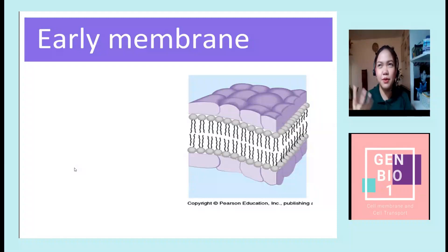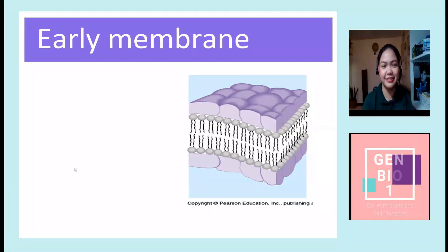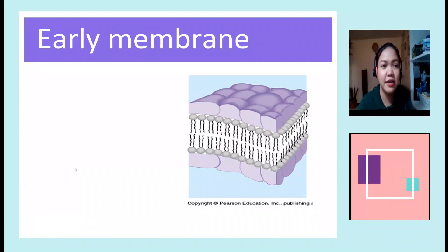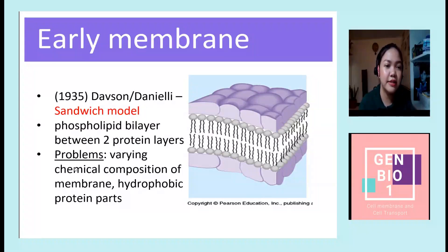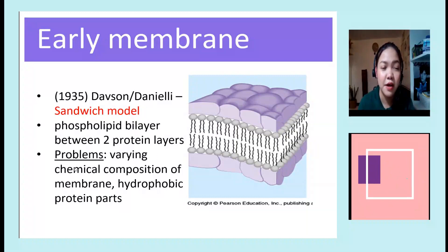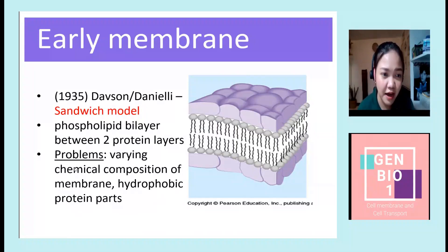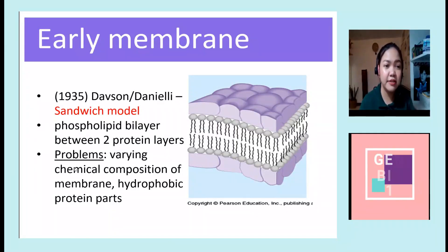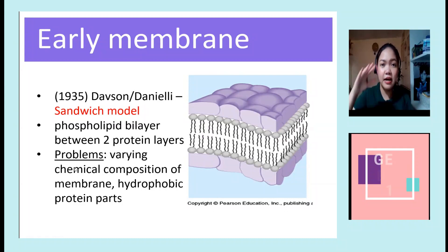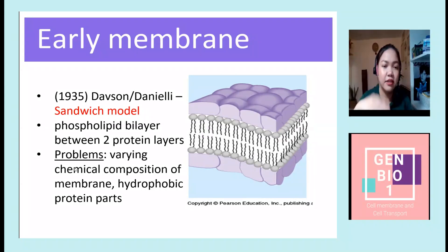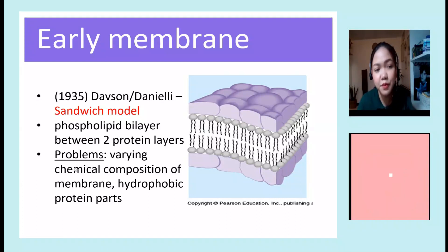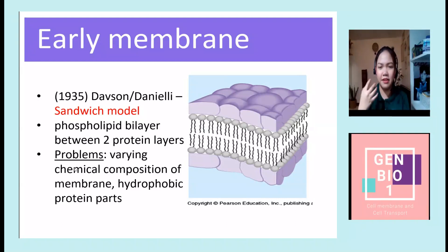You know about the fluid mosaic model — when we were in high school, it was always mentioned that the cell membrane has this fluid mosaic model. But before that, we had an earlier model called the sandwich model, proposed by Davson and Danielli in 1935. They said that the membrane is composed of a phospholipid bilayer, with protein at the top layer and at the bottom.